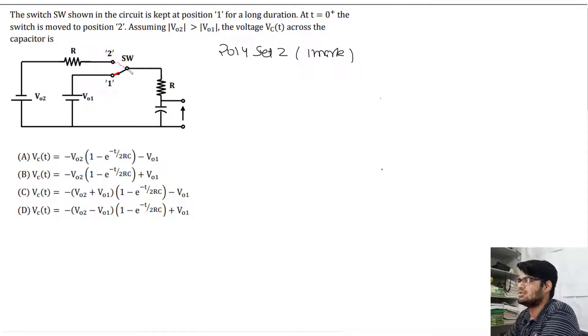At t equals 0+, the switch is moved to position 2. Assume V02 is greater than V01. Find the voltage Vc(t) across the capacitor.